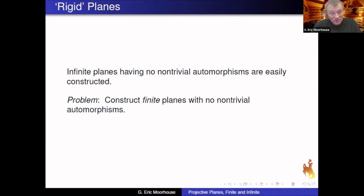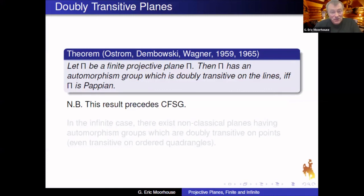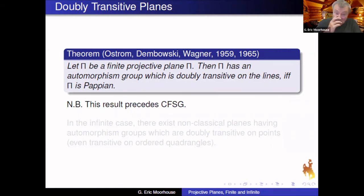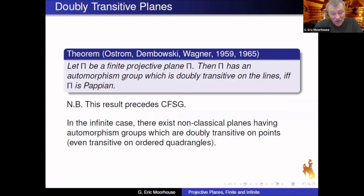If you have a finite plane with a doubly transitive automorphism group, either on the points or on the lines, then the plane has to be Papian. This theorem predates the classification of finite simple groups — it's old-style permutation group theory. In the infinite case, the answer is quite different: there are lots of non-classical planes having automorphism groups that are doubly transitive on the points, even on ordered quadrangles.